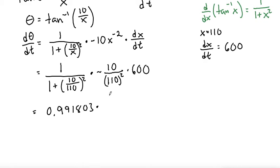And then we multiply that by 10 divided by 110 squared, and there's a negative out front. Let me just go ahead and multiply that by 600 as well. That gives negative 0.495868.